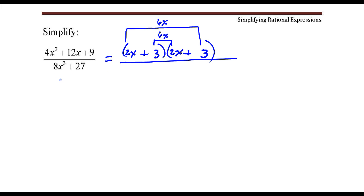In the denominator, this is a sum of two cubes. So we can write the sum of two cubes using the sum of cubes factoring formula, and in this case, let's see. 8x cubed is the perfect cube of 2x, and 27 is the cube of 3.